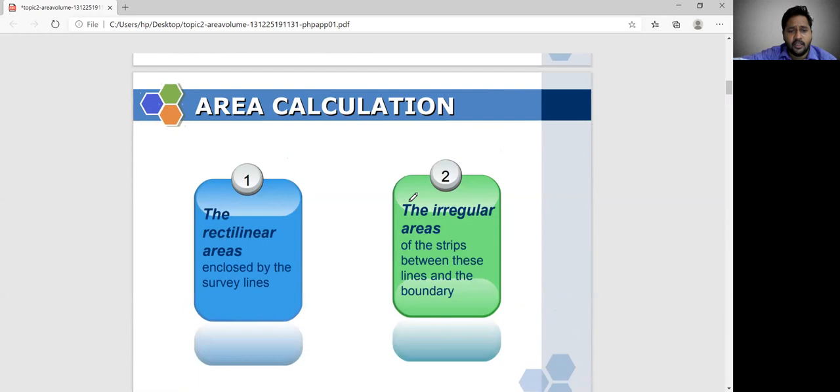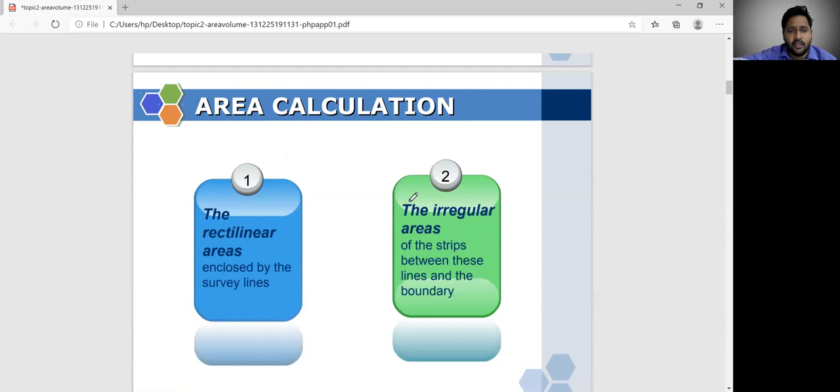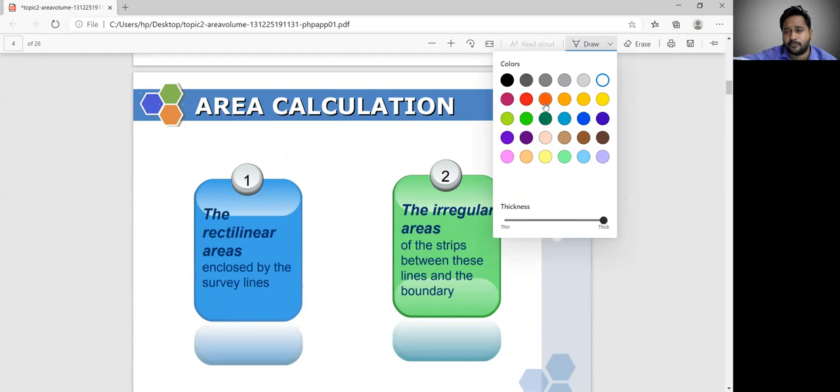See this area calculation, the rectangular areas closed by survey lines. One is one method and another is irregular areas. If your body is irregular, your body is very irregular.